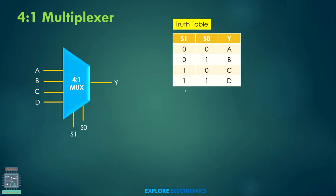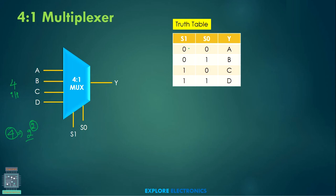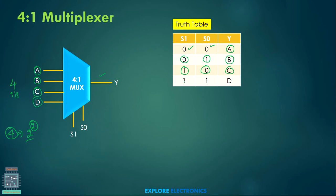Now let us look at the 4-to-1 multiplexer. It has 4 input lines and 1 output line. To select among 4 inputs, we need 2 select lines, since 4 = 2². The truth table: when S1 S0 = 00, the first input A is selected; when S1 S0 = 01, B is selected; when 10, C is selected; and when 11, D is selected. So the 4 different select line combinations each choose a different input at the output.